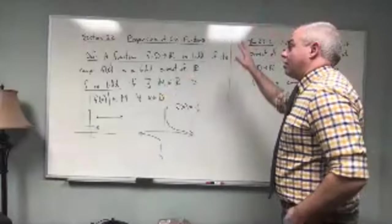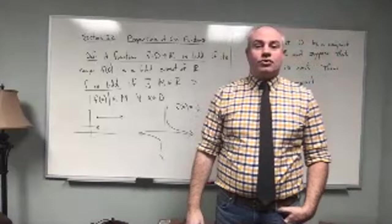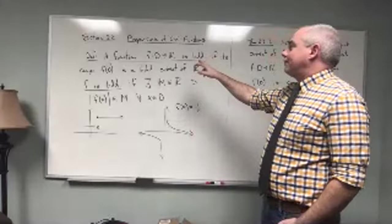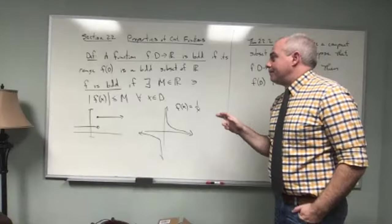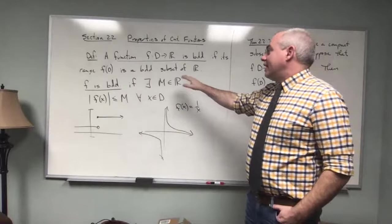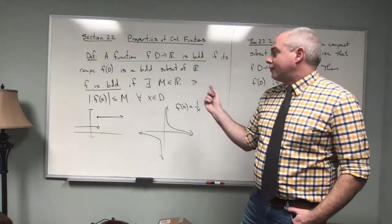I've already kind of talked through this, but I wrote some stuff on the board, nothing super significant yet. What we're talking about today is section 22, which is on properties of continuous functions. We have a definition: a function f from d to r is bounded if its range f of d is a bounded subset of r. Also, f is bounded if there exists a number capital M in r such that the absolute value of f of x is less than or equal to M for every x in the domain.